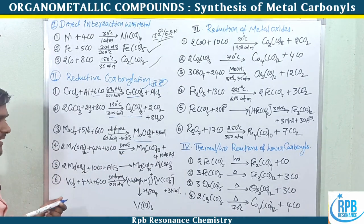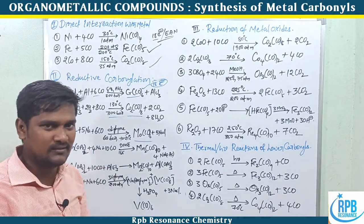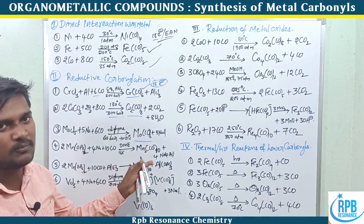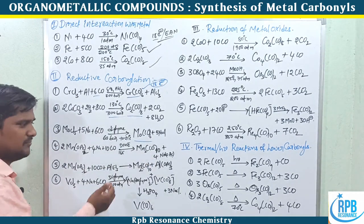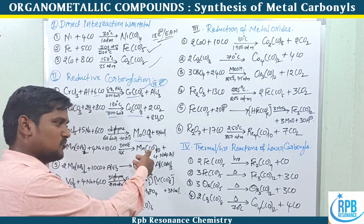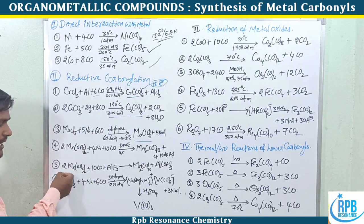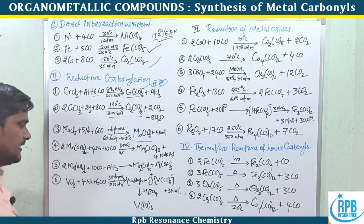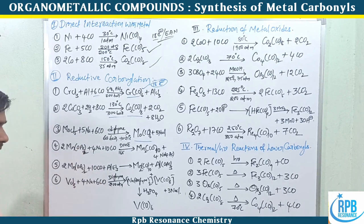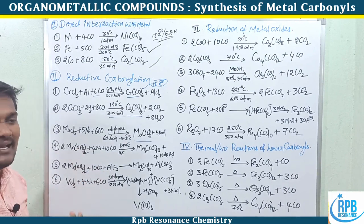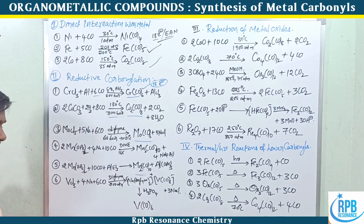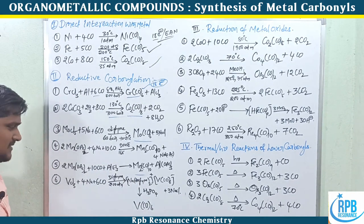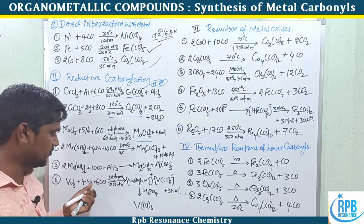Fourth example: manganese acetate treated with sodium metal along with 10 moles of carbon monoxide produces the dimerization form of manganese carbonyl — Mn2(CO)10. Similarly, manganese diacetate treated with 10 moles of carbon monoxide along with triethylaluminium also produces the dimerization form of manganese.